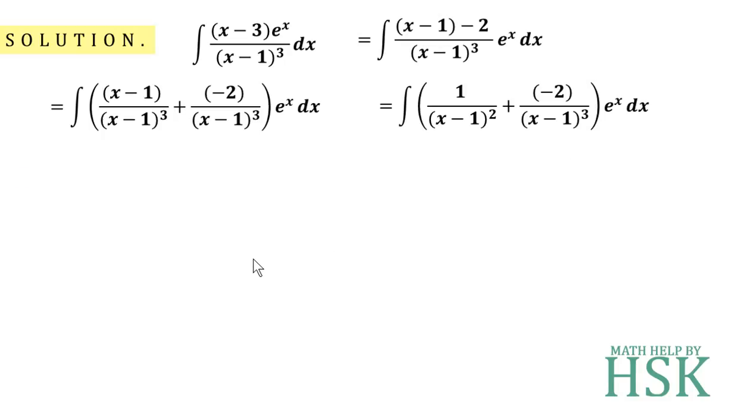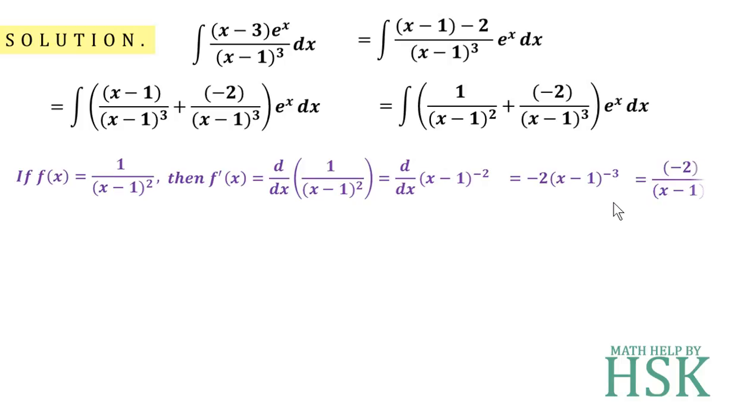Now, if we consider that f(x) is equal to 1 upon x minus 1 whole square, then f dash x would be the differential coefficient of 1 upon x minus 1 whole square, which is equal to d upon dx of x minus 1 raised to the power of minus 2. On differentiating, I am going to get this as minus 2 into x minus 1 to the power of minus 3, or minus 2 upon x minus 1 whole cube.